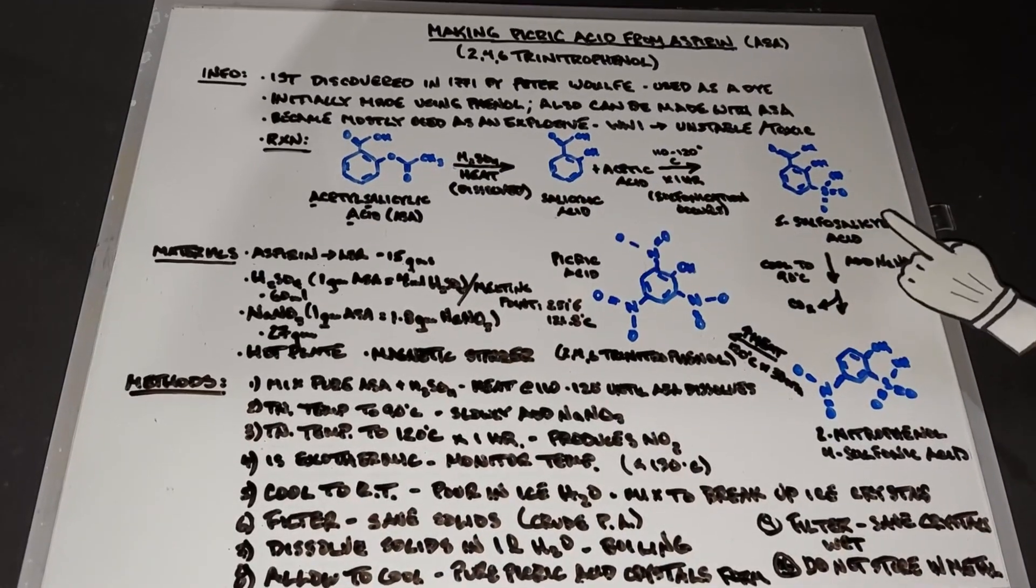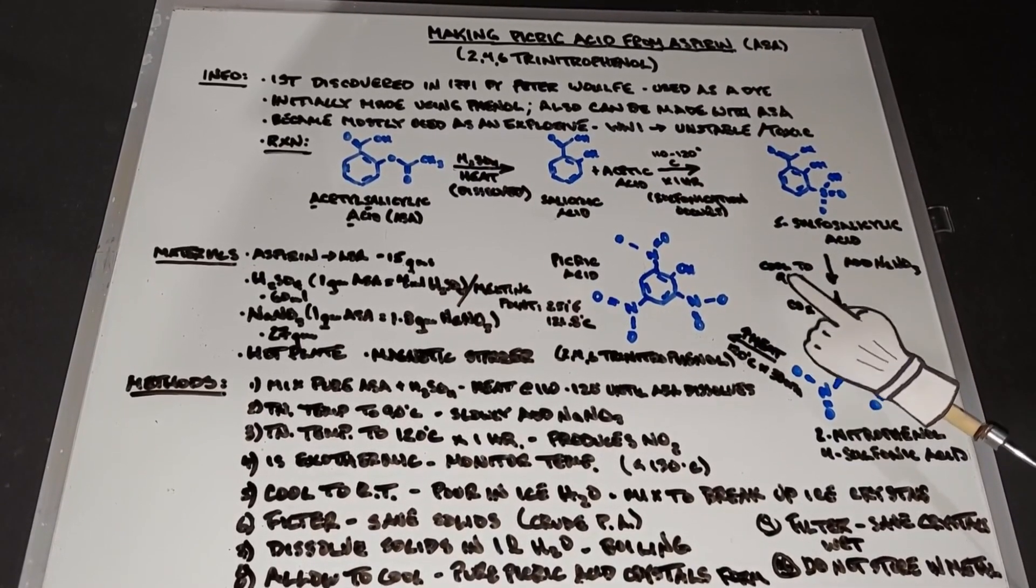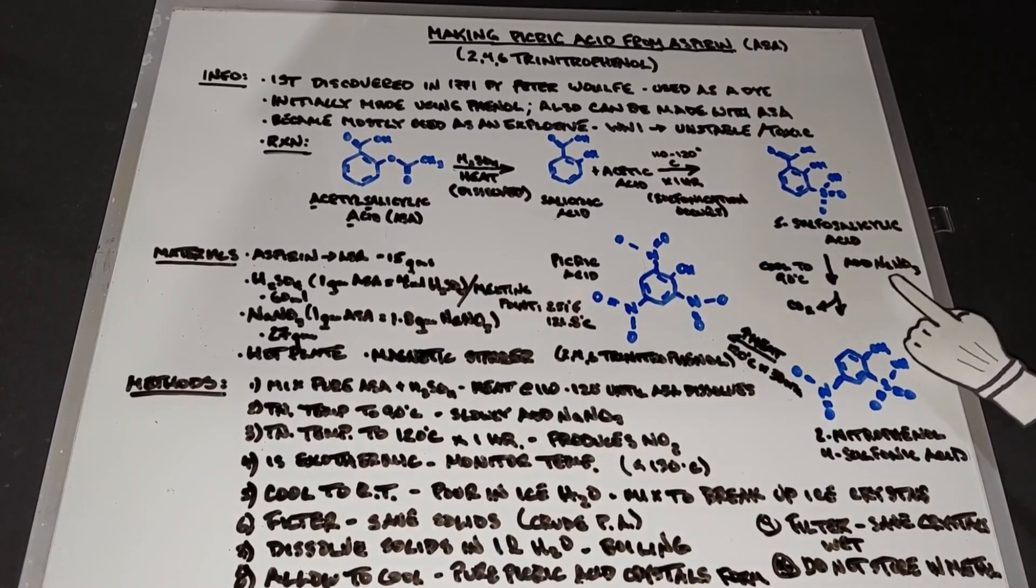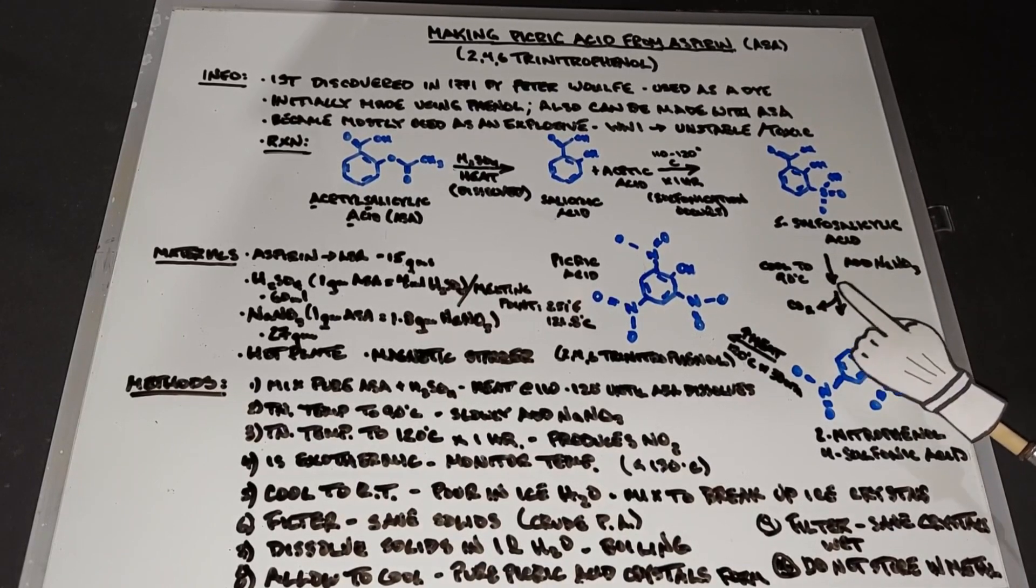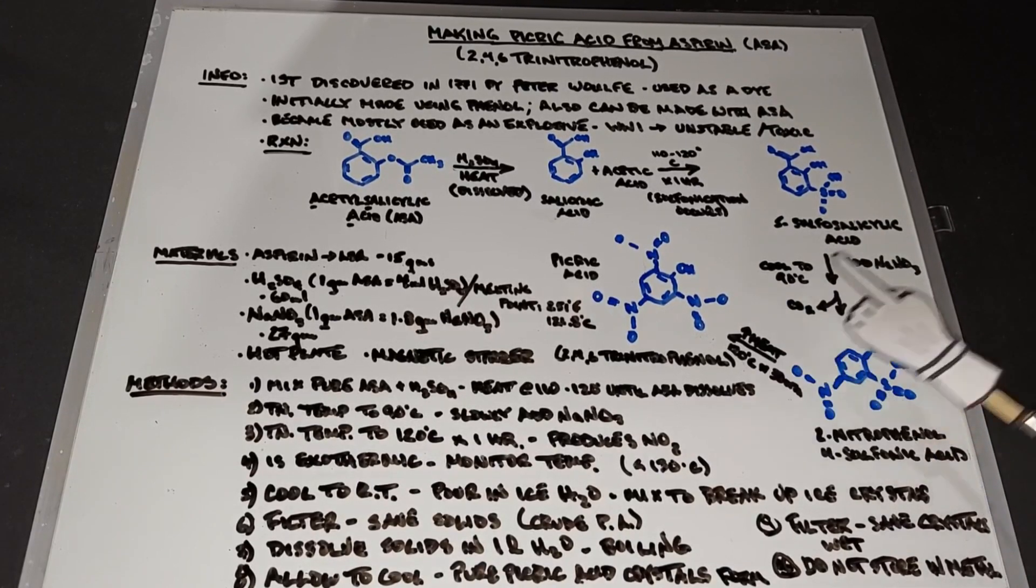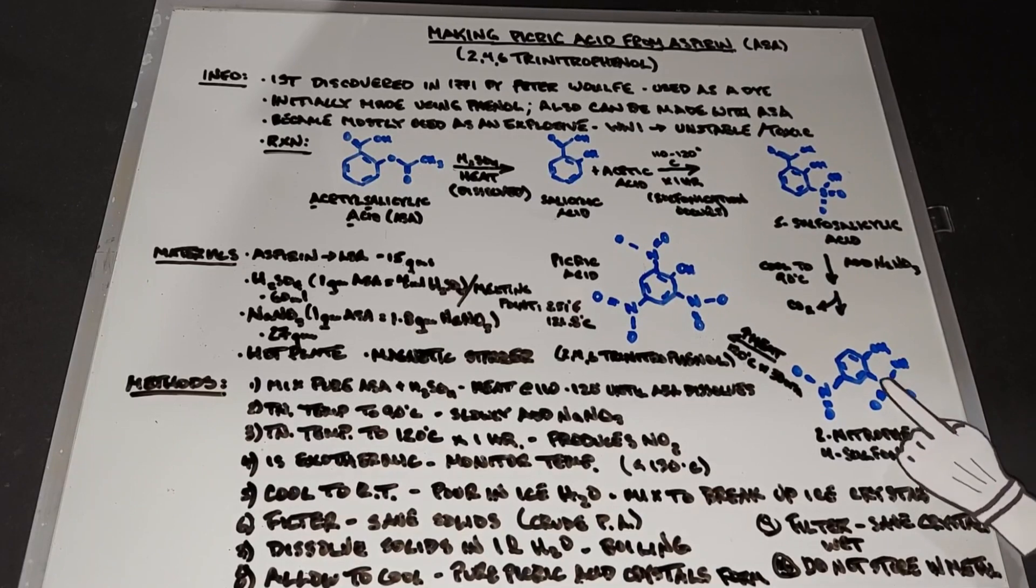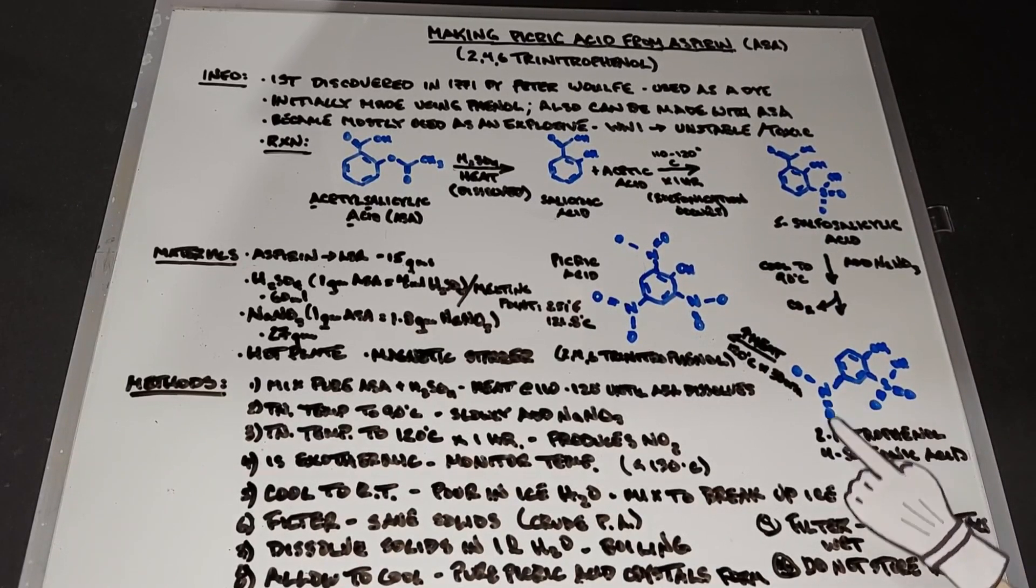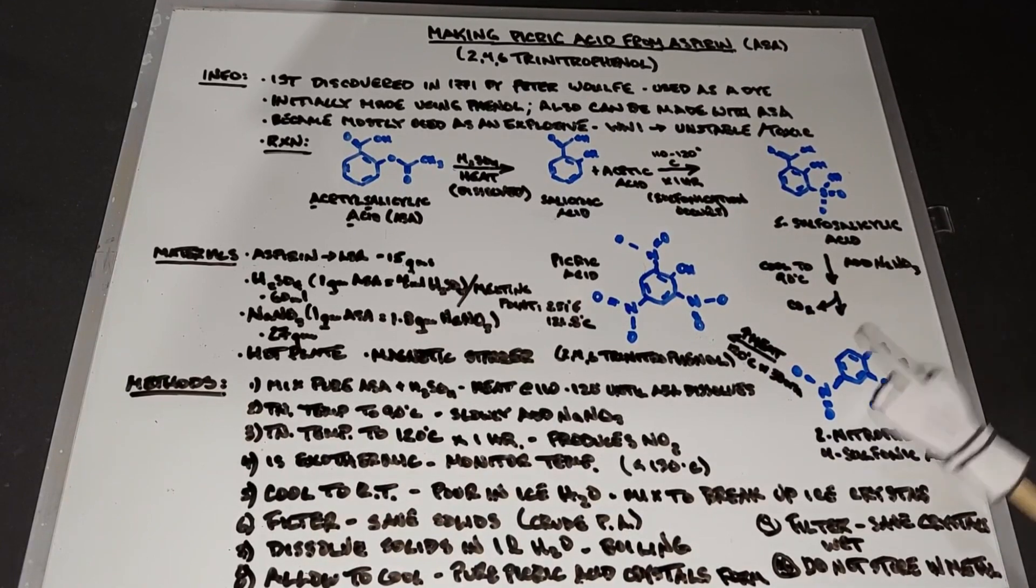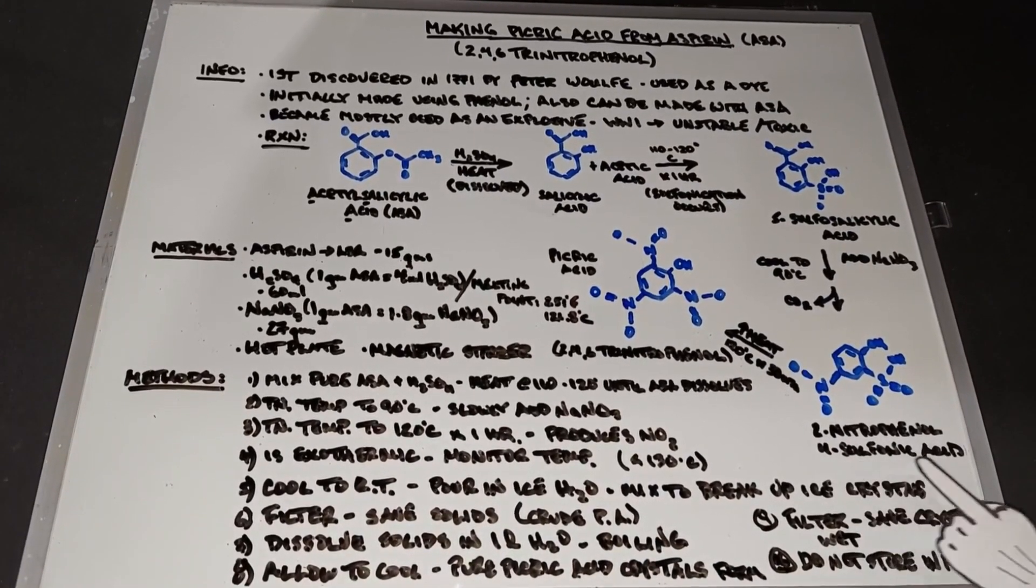From the 5-sulfosalicylic acid, it's cooled down, the entire solution, and sodium nitrate is slowly added. During this step, decarboxylation occurs, carbon dioxide is given off, and you will end up with a benzene ring here that has the sulfur compound on this side, but you've also added one nitrogen with two oxygen rings that comes from the sodium nitrate. This compound is called 2-nitrophenol-4-sulfonic acid.